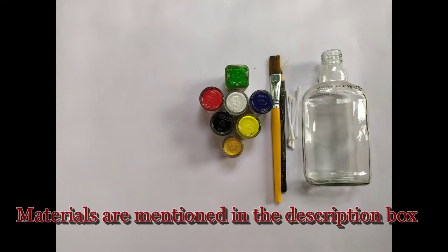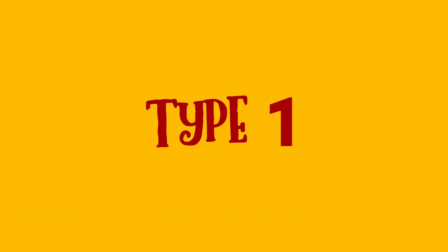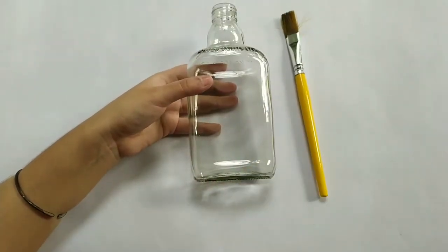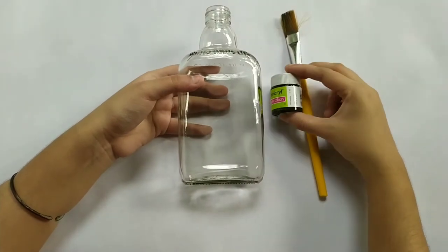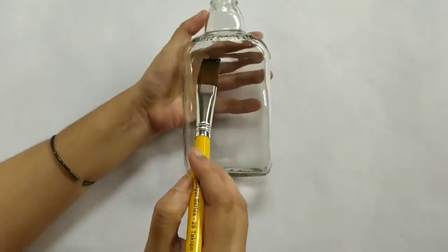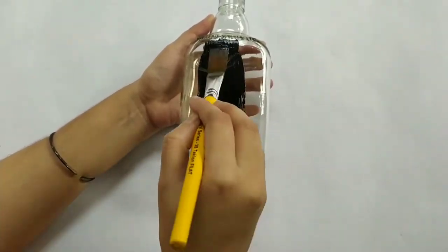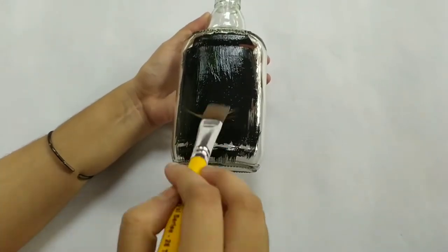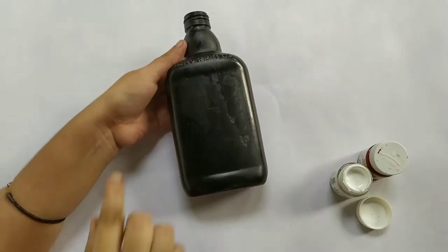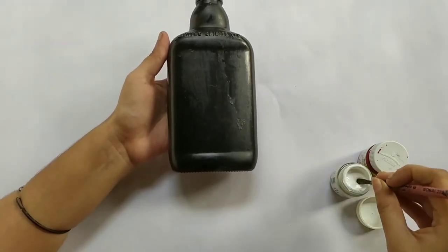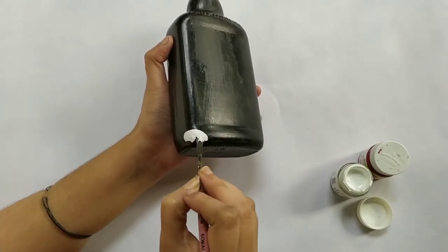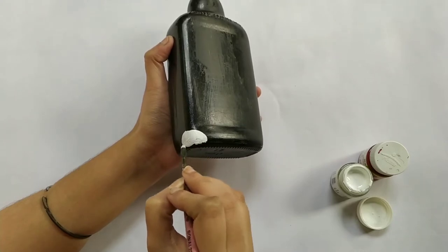Hello everyone, welcome back to my channel. Today I will show two types of bottle decoration. I am going to apply black acrylic color all over this glass bottle. You can use brush or sponge for applying color. It will look like this after drying. Now I am making a half circle in the corner.